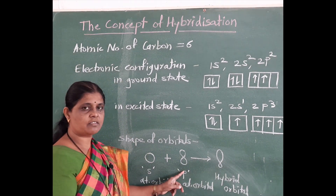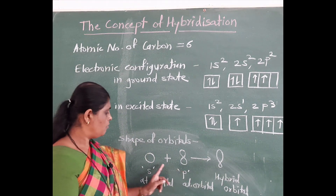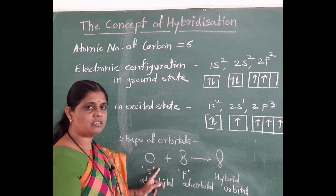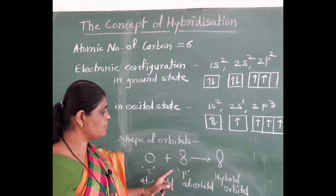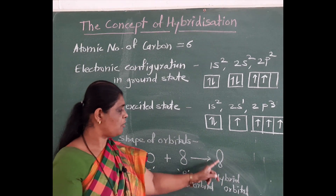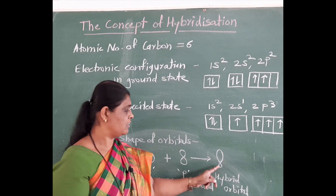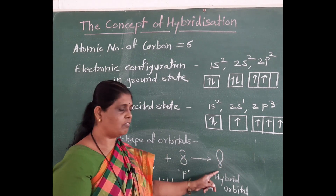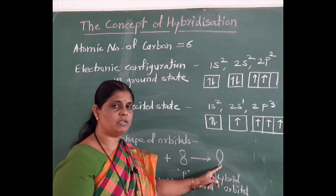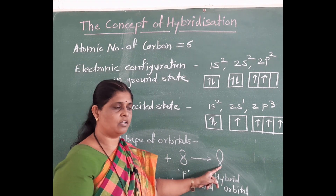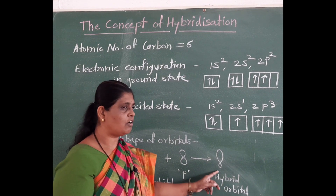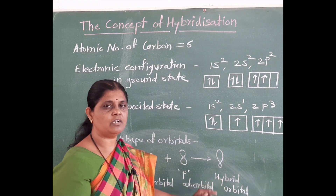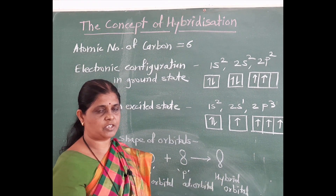The shape of the S orbital is spherical and the shape of the P orbital is dumbbell. But after mixing these orbitals, the shape of the hybrid orbital is like this — one lobe is bigger while another lobe is smaller. After hybridization, all hybrid orbitals have the same shape.